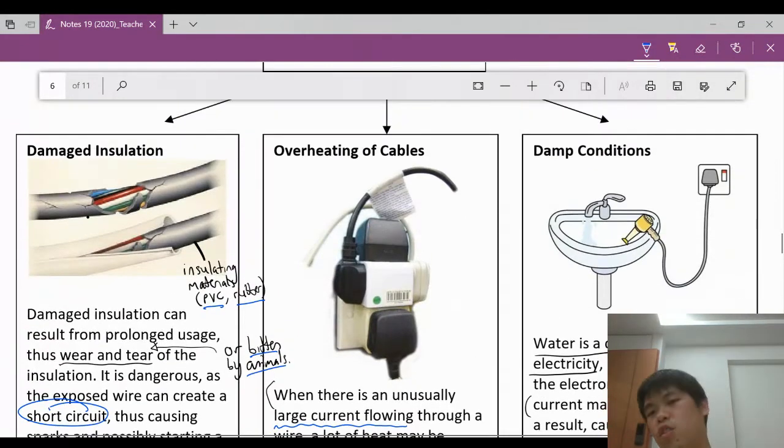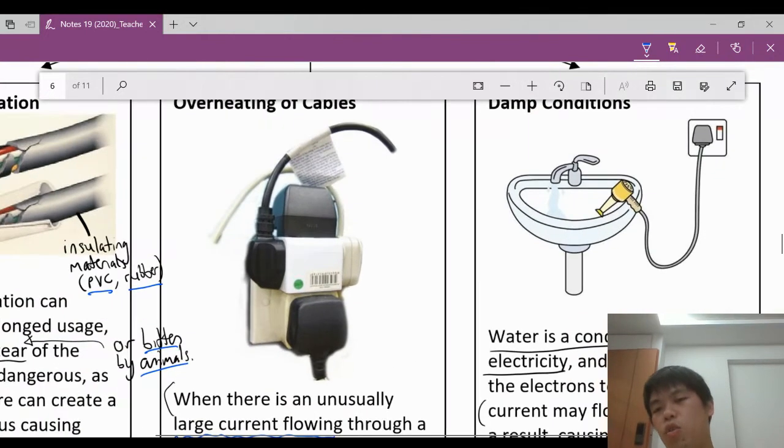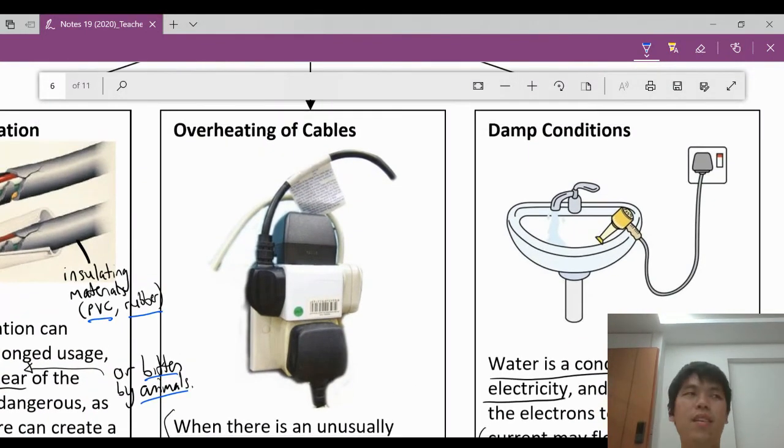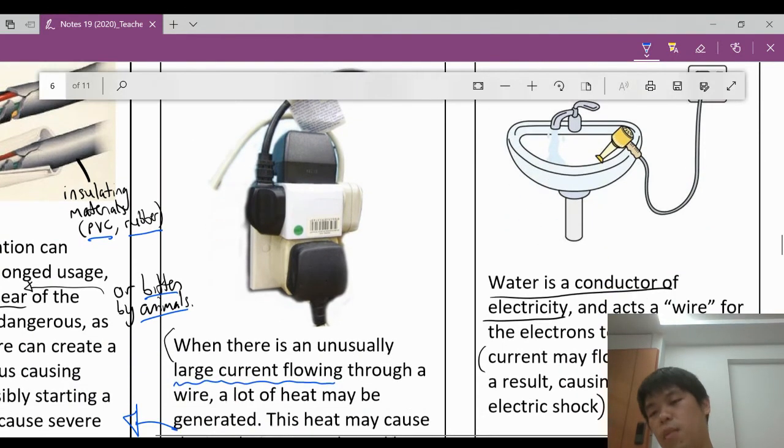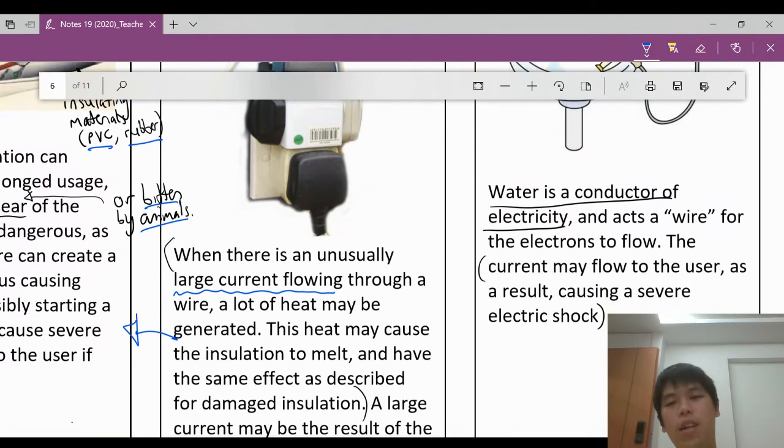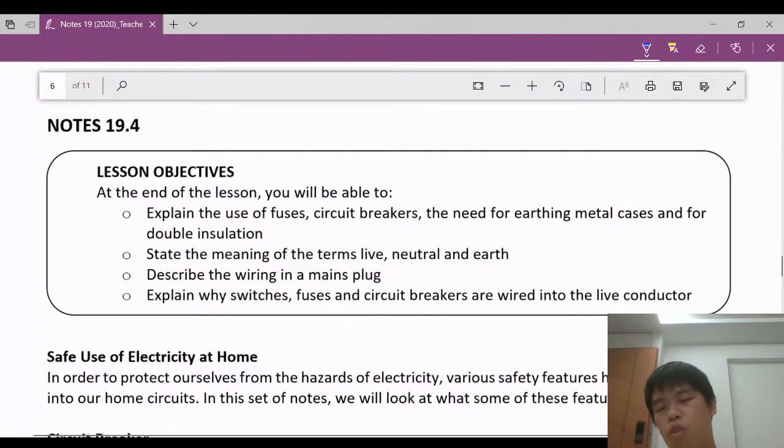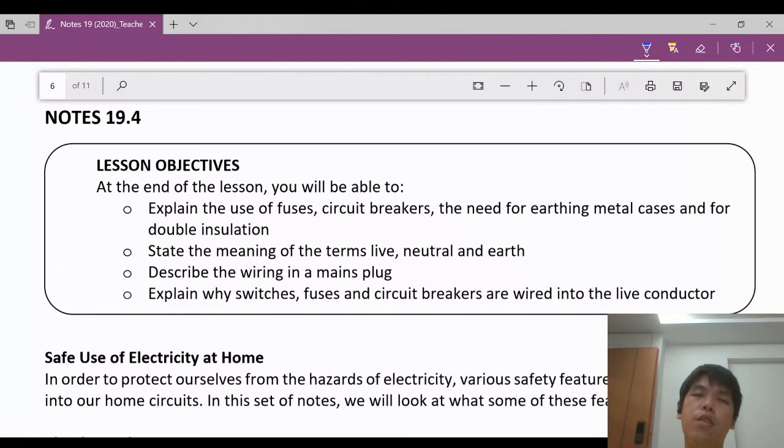So let's look at the next hazard. The next hazard is damp conditions. So when we use electrical devices in the toilet, we realize that it's very dangerous because water is a conductor of electricity. And current may flow to the user through this water, which is a conductor of electricity, and it can cause an electric shock. So now once we know that electricity is dangerous, there's two dangers: electrical fire and electric shock.